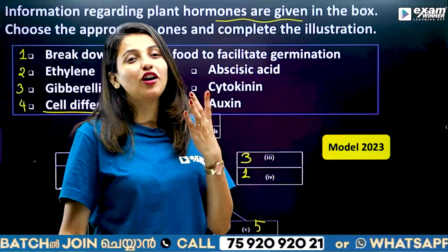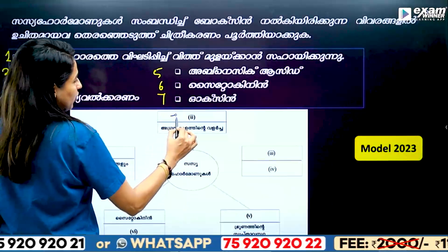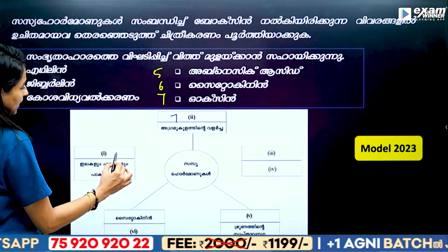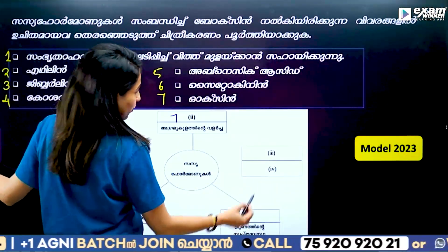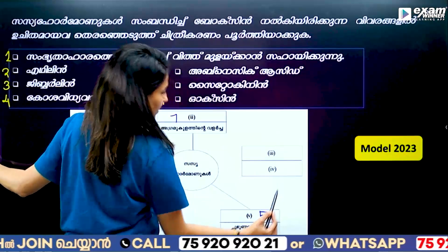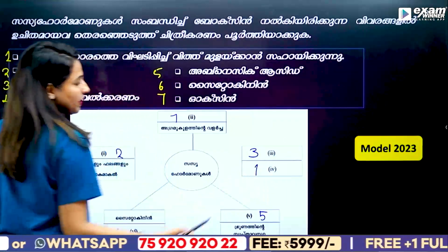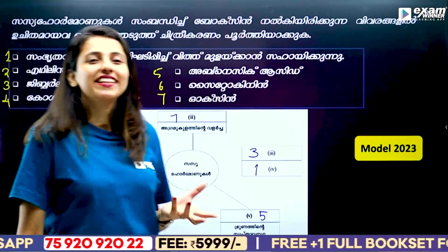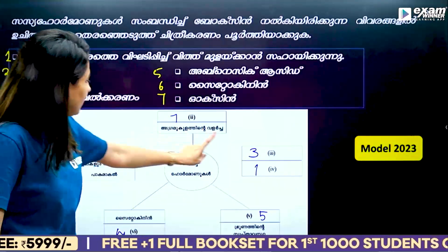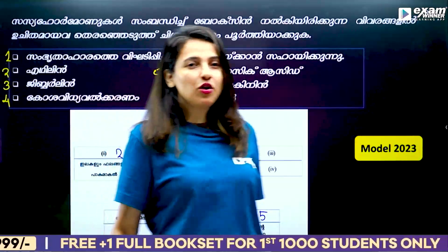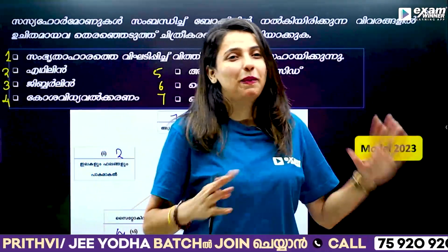That is the sprouting of new leaves. We have Auxin, Ethylene, Cytokinin, Abscisic acid, and Gibberellin. The question comes for 4 marks, 3 marks, 3 marks. We have covered these marks.